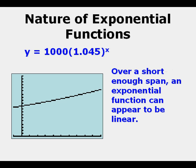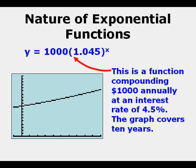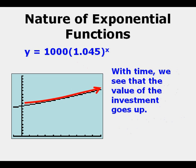Over a short enough span, like in this function we see here, an exponential function can appear to be linear. This particular function is compounding $1,000 annually at an interest rate of 4.5%. This graph covers 10 years. With time, we see the value of the investment goes up, hence it's a growth function.